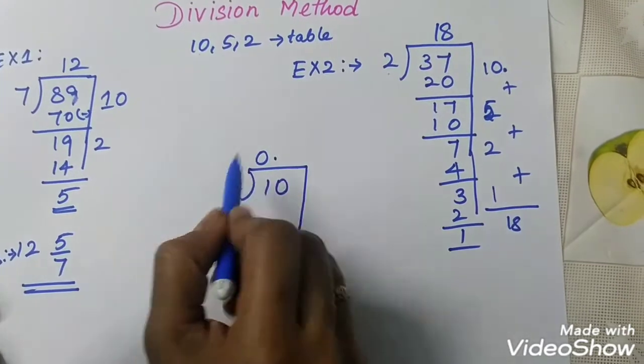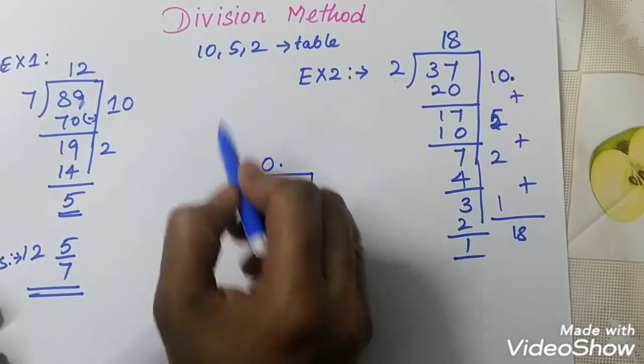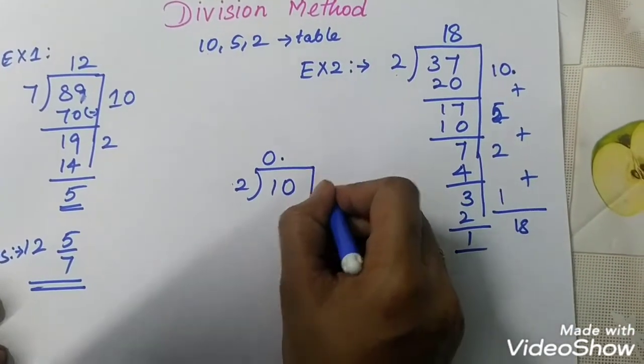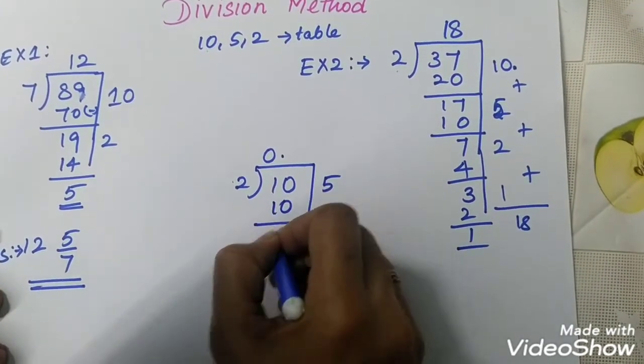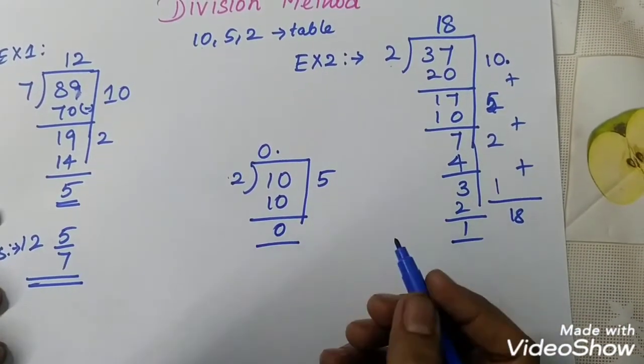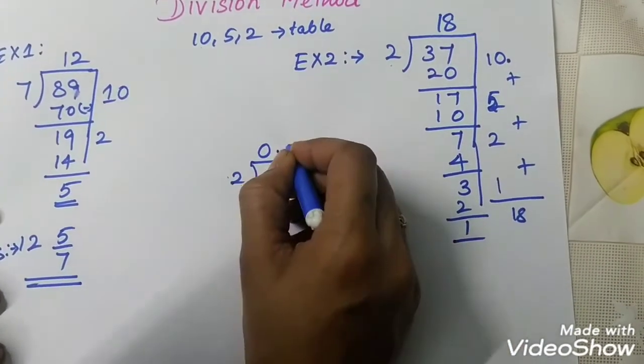So, you can take 5. 2 5's are 10. So, add 10, 0. So, the remainder is coming 0. This 5 we can add here.